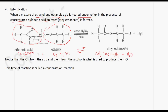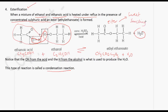What we notice is that the OH from the acid and the H from the alcohol come out as water. Therefore, this reaction is called a condensation reaction because water is being produced. It is also an esterification reaction. The ester ethyl ethanoate is usually sweet smelling and is responsible for the sweet smell of certain fruits.